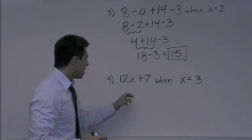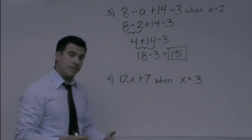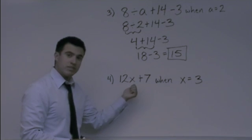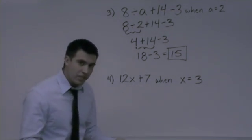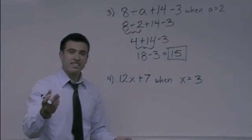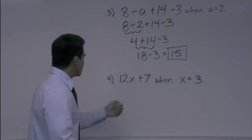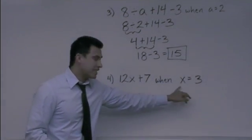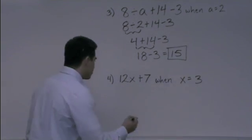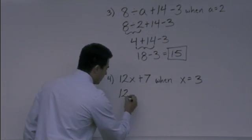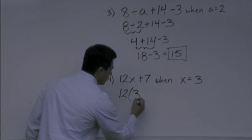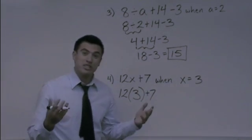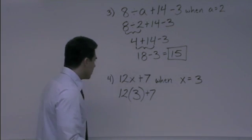So now we have on the next problem 12x plus 7. Now remember earlier in the video I told you that when there's a number next to a variable what does that mean? What does that mean Aunt Sally? Multiplication. Great job. So you have 12 times x plus 7 when x equals 3. So let's go ahead and plug in that 3 really quick and let me make it a little bit bigger so Aunt Sally can see from back there because she woke up and she's ready to go back to the carnival again before it closes.